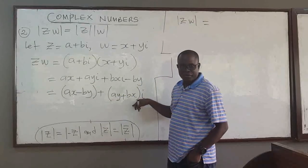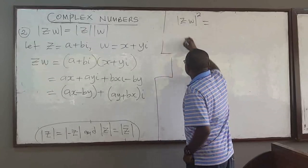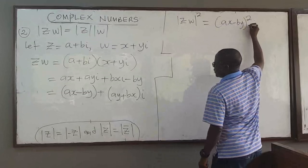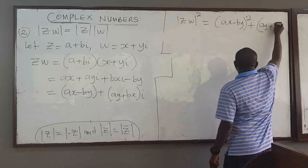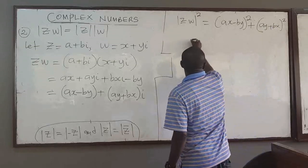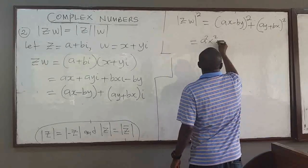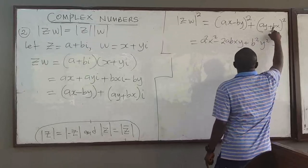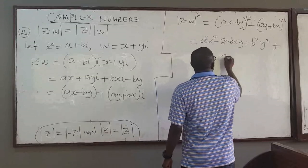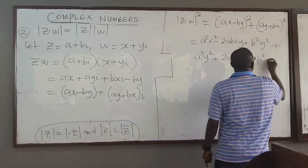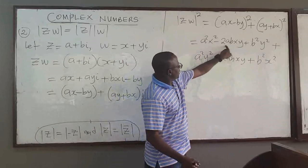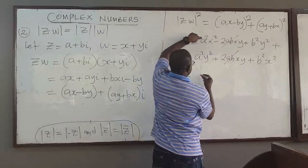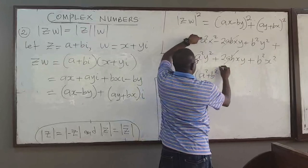The modulus of ZW squared equals the real part squared plus the imaginary part squared, which is (AX − BY)² + (AY + BX)². Expanding: A²X² − 2ABXY + B²Y² + A²Y² + 2ABXY + B²X². The middle terms −2ABXY and +2ABXY cancel out, leaving A²X² + B²Y² + A²Y² + B²X².